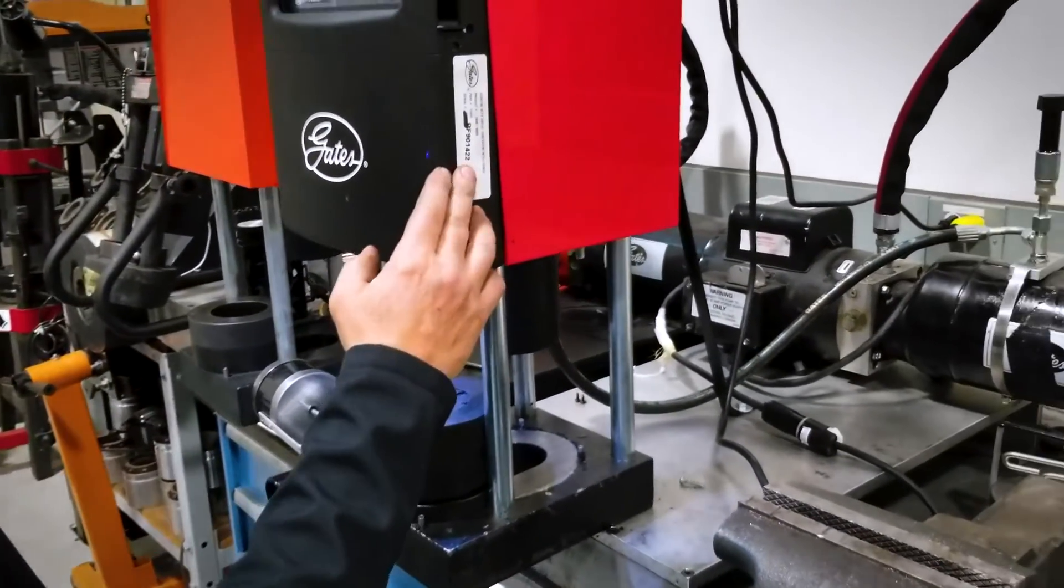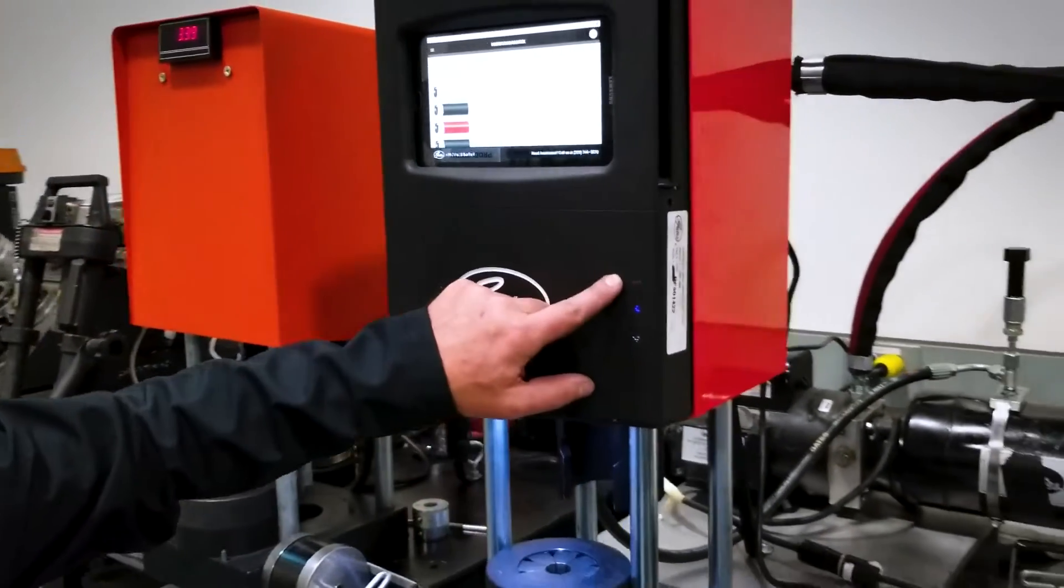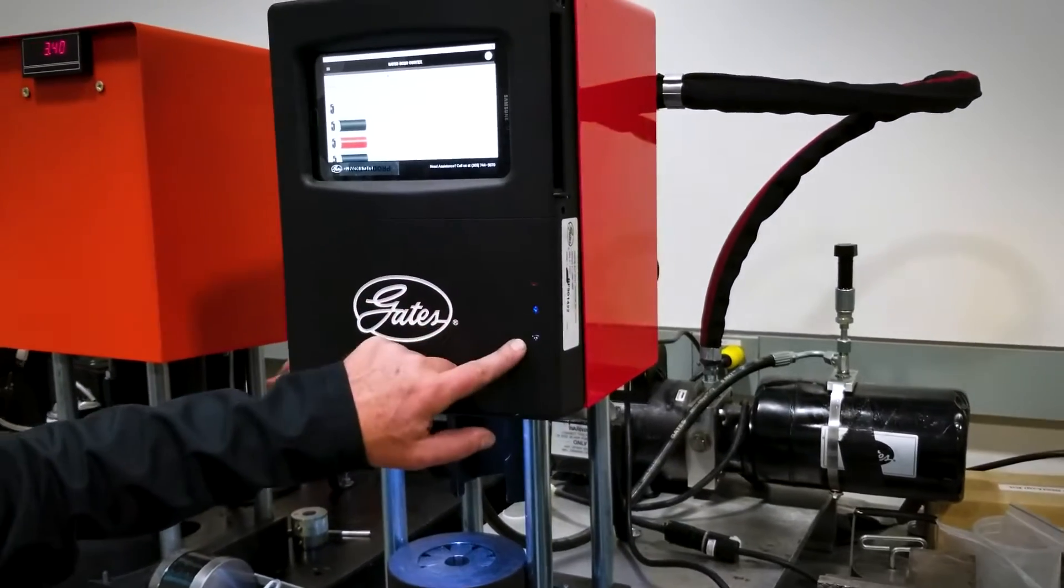On the side here we have your serial number, which will be required when you register your machine. On the front we've got your power light, Bluetooth, and Wi-Fi.